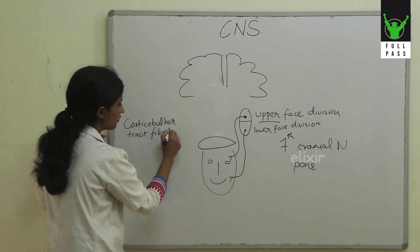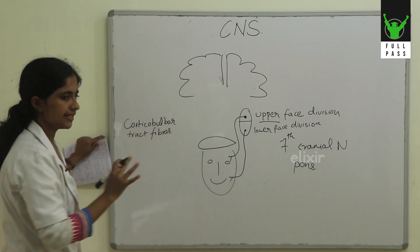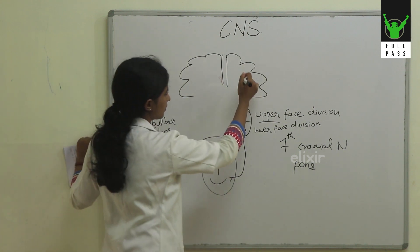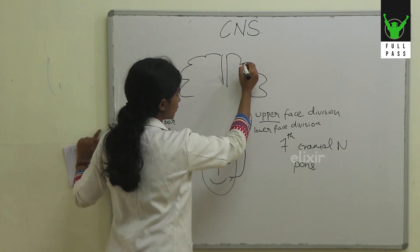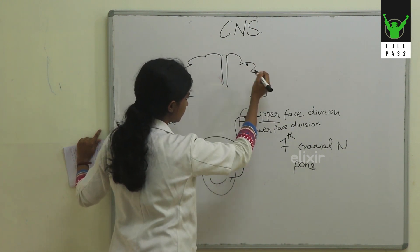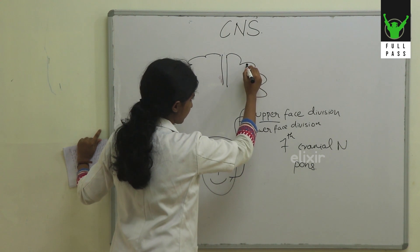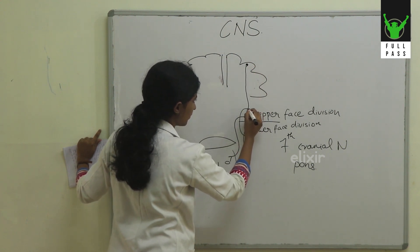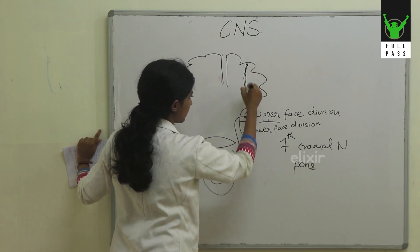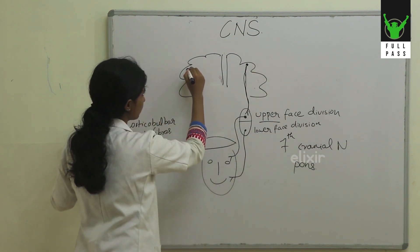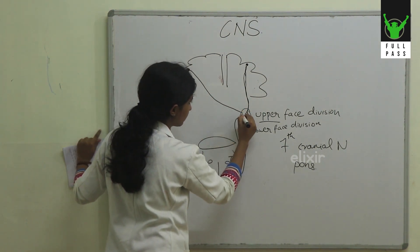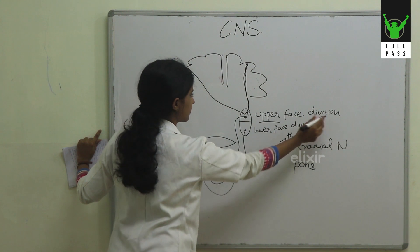The corticobulbar tract fibers mainly carry motor fibers to the cranial nerves. They arise from the cortex, and from the same side of the cerebral hemisphere, we have upper motor neuron fibers going to the upper face division. And from the opposite side also, we have upper motor neuron fibers going to the upper face division — meaning the upper face division receives bilateral cortical supply.